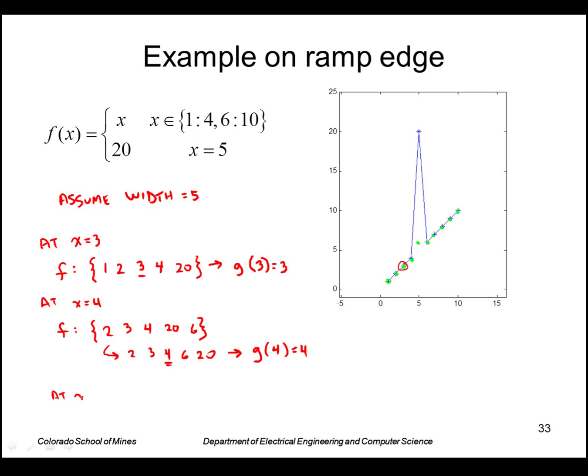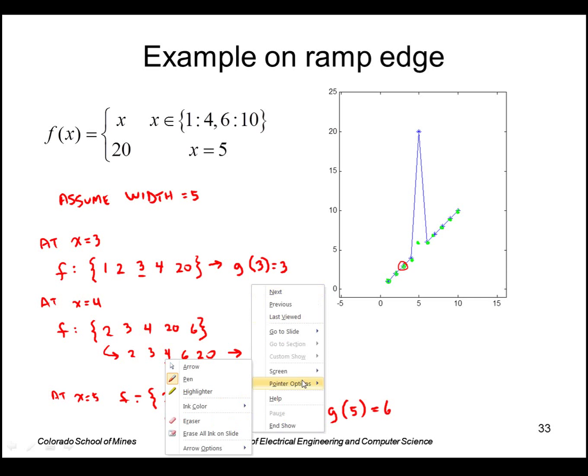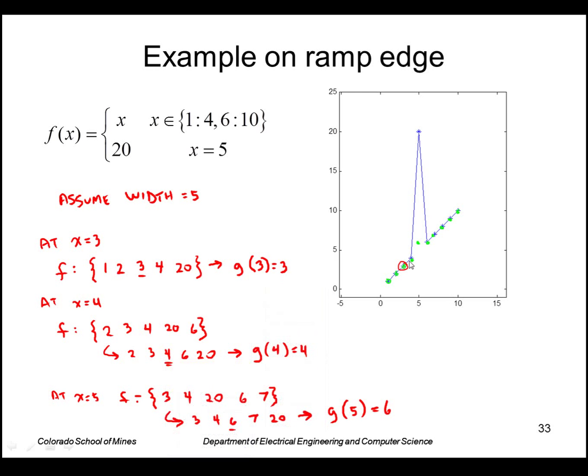At x equals 5, f is the set 3, 4, 20, 6, and 7. Sorting those is 3, 4, 6, 7, and 20. The median is 6, so g of 5 is 6. So you can see it knocked down that peak without really affecting the values in the rest of the image here.